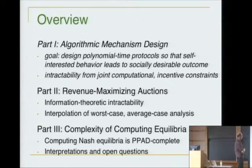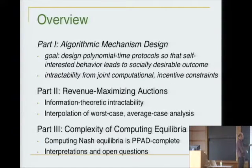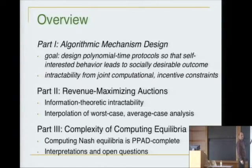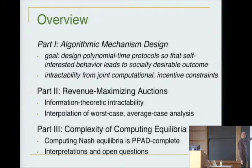The plan is to touch on three different ways that intractability rears its head in algorithmic game theory. The first part is algorithmic mechanism design, where we have two different types of constraints: computational constraints — protocols that run in polynomial time — and game-theoretic constraints, which are familiar to economists but were foreign to computer scientists. The goal is polynomial-time protocols where selfish behavior leads to a desirable outcome like an efficient allocation of scarce resources.